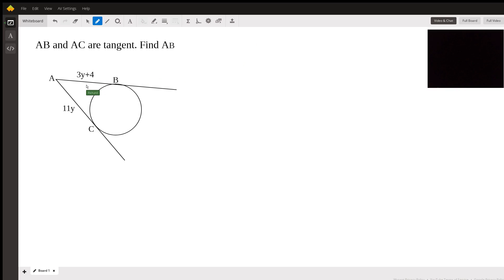So this is called a tangent-tangent. You can see we have an external point here, point A, and from that point these two lines are extended and they touch the circle at a single point, point B and point C.